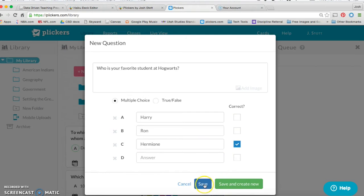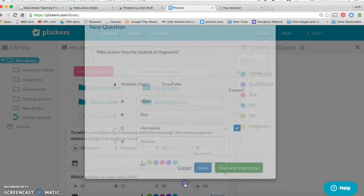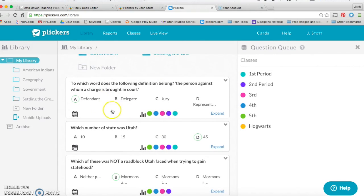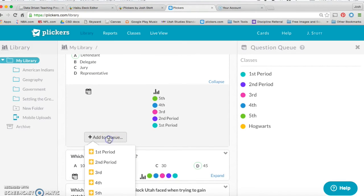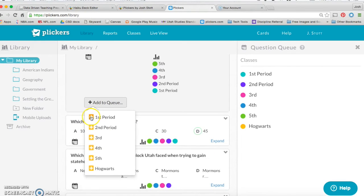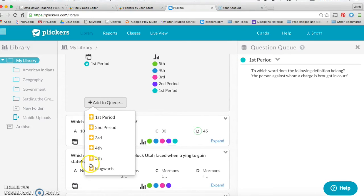Then, you're going to say Save the Question, or Save and Create a New Question. Once you have your question, I'm going to use an old question. You can come down here, and you can press Add to Queue. Then, you can assign it to each of your classes, like your Hogwarts class you just created.